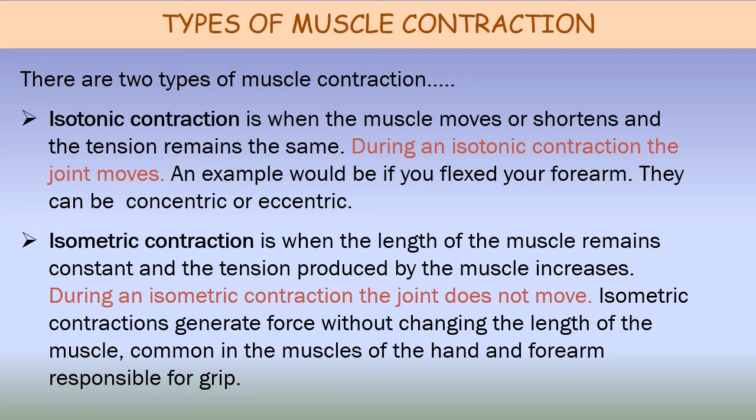Isotonic contraction is when the muscle moves or shortens and the tension remains the same — that is, the force of contraction developed by the muscle remains almost constant while the muscle changes its length. During an isotonic contraction the joint moves. An example would be if you flexed your forearm. They are generally used for body movements and for moving objects. The two types of isotonic contractions are concentric isotonic contraction and eccentric isotonic contraction.